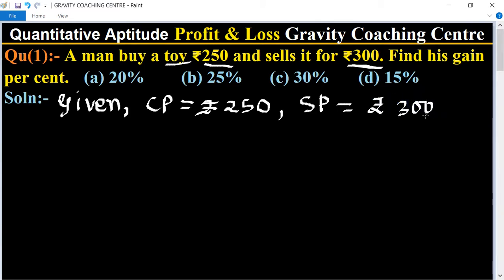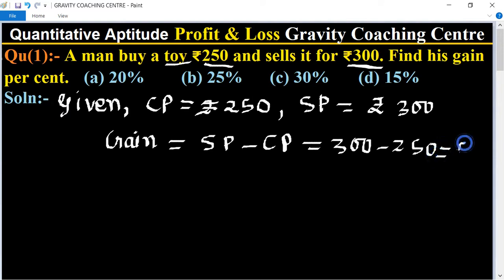Here, SP is greater than CP, so there is a gain. Formula of gain equals SP minus CP. So gain equals 300 minus 250, equals rupees 50. Now to find his gain percent, therefore gain percent...